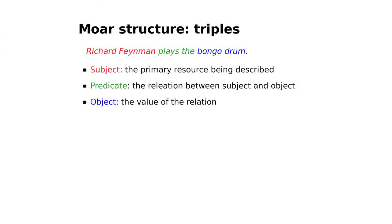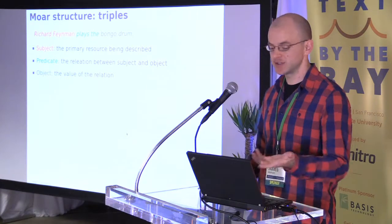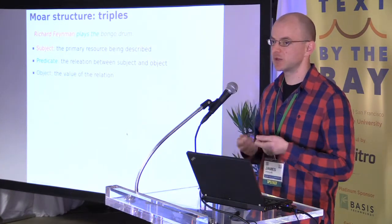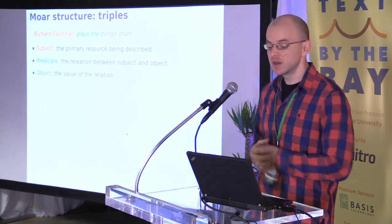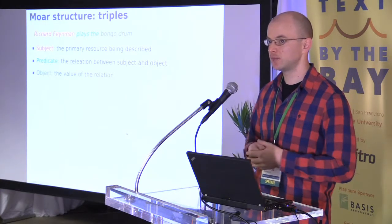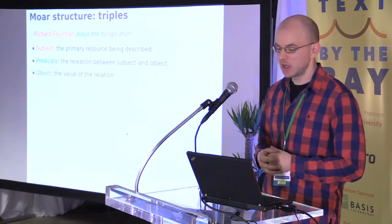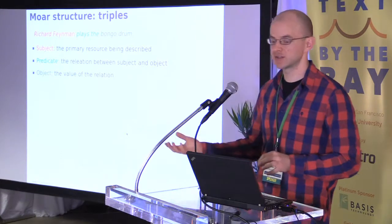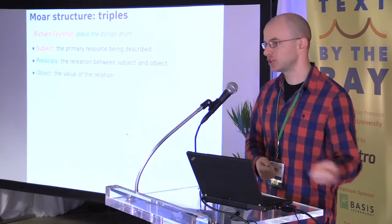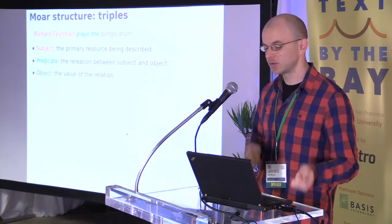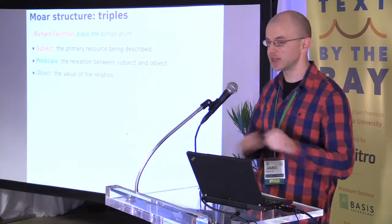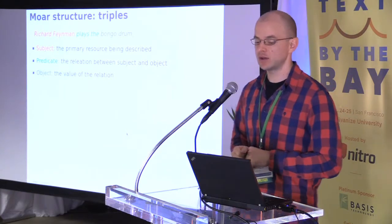We're going to be basing everything on what's called triples. Triples are a way to break down a simple statement — such as an English sentence like 'Richard Feynman plays the bongo drum' — into three parts that we can individually tag and identify. Those parts are the subject, predicate, and object. In this case, the subject is Richard Feynman, the object is bongo drum, and the relation between Feynman and bongo drum is the predicate 'plays the.' With these three pieces of information, we can see there's a relation between these two entities.